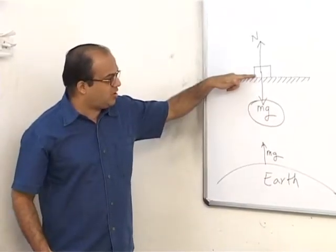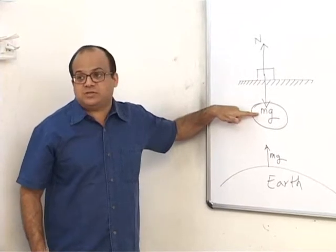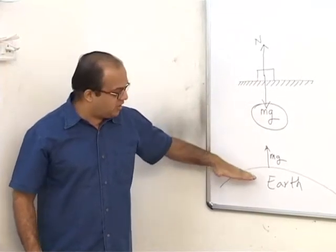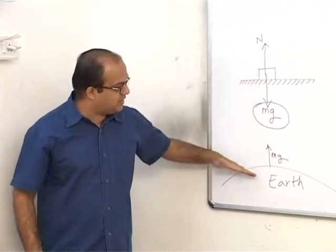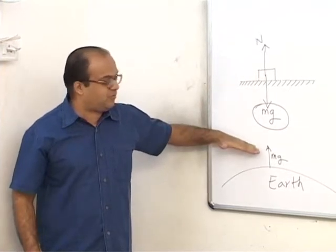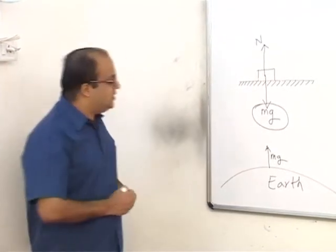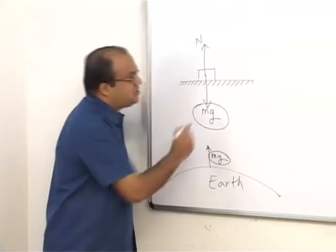The earth is pulling the block with a force equal to Mg. As per Newton's third law, the block is also pulling the earth with an equal and opposite force Mg. And these two forces form an action-reaction pair.